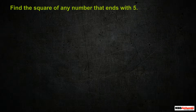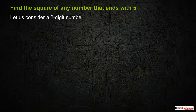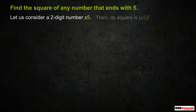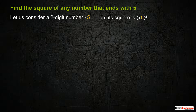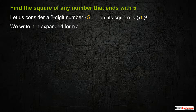Let us see one trick to find the square of any number that ends with 5. Let us consider a 2-digit number that ends with 5, that is, x5. We find its square as the square of x5, and write the expanded form of x5 as (10x + 5)².